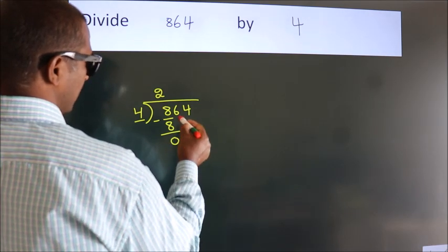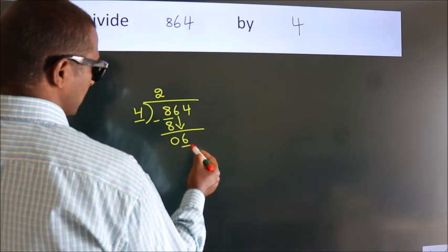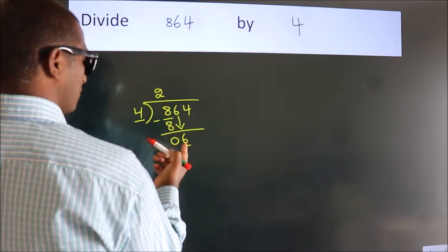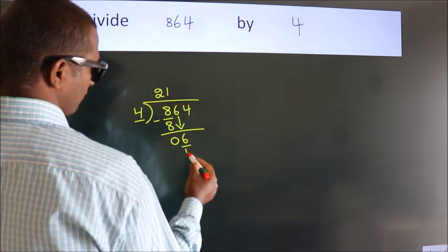After this, bring down the beside number. So, 6 down. A number close to 6 in 4 table is 4 ones, 4.